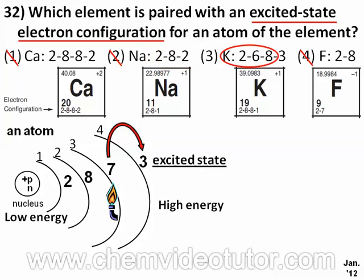That makes choice three the answer, and it is correct because two electrons jumped from the second energy level to the fourth energy level, becoming excited, without changing the total number of electrons.